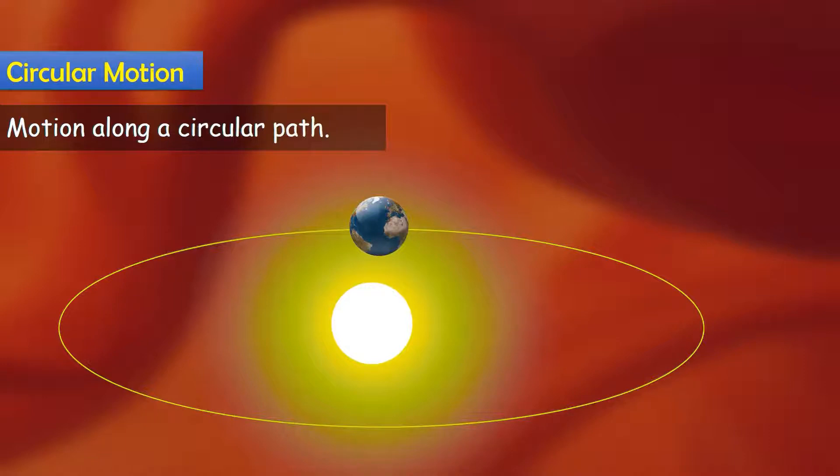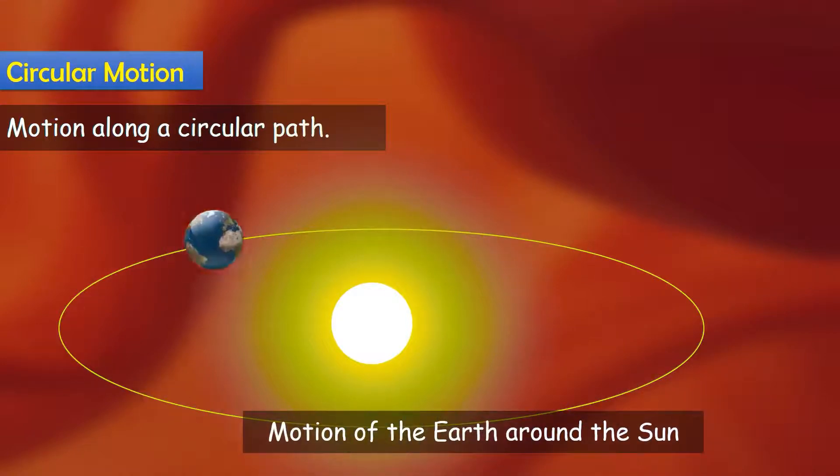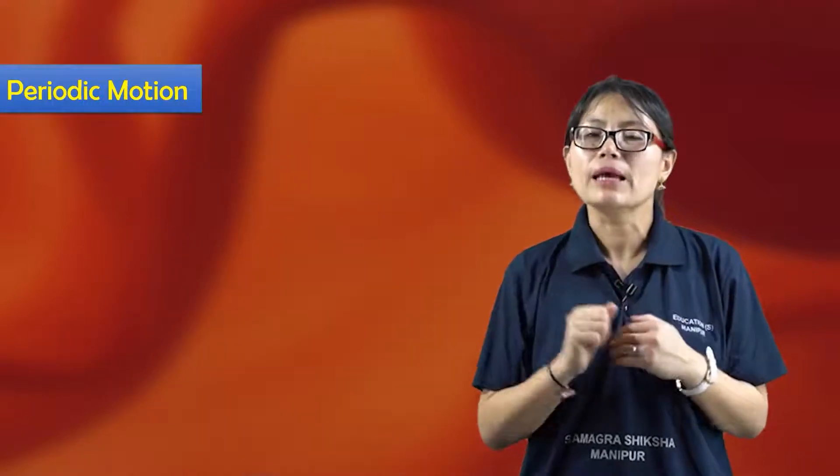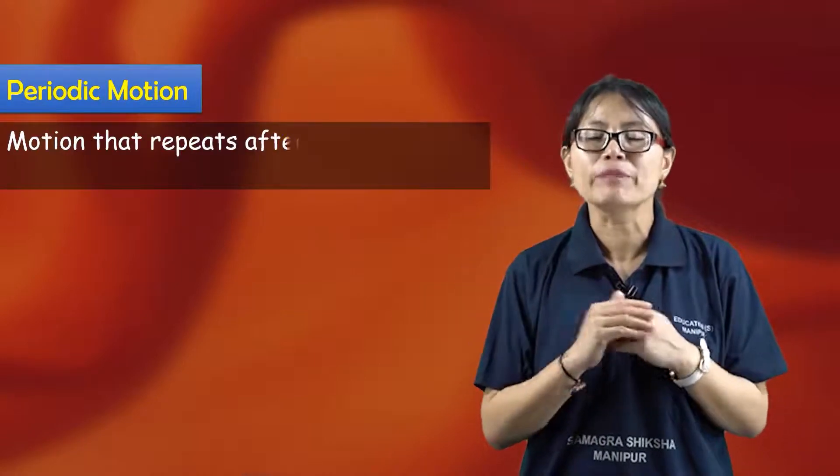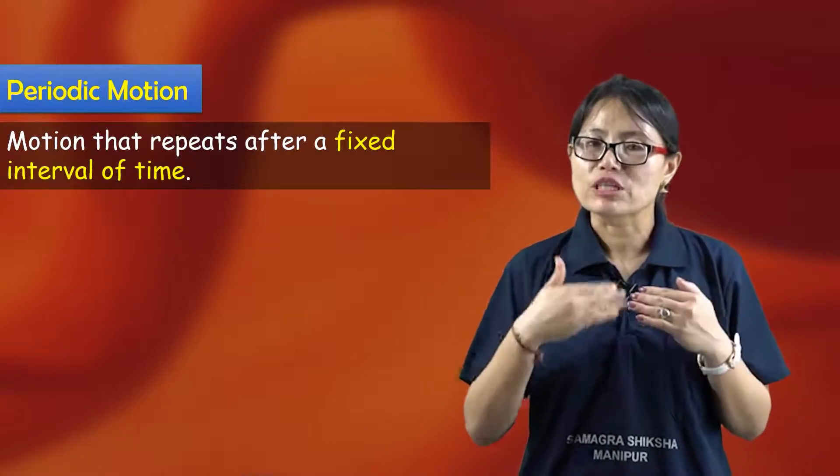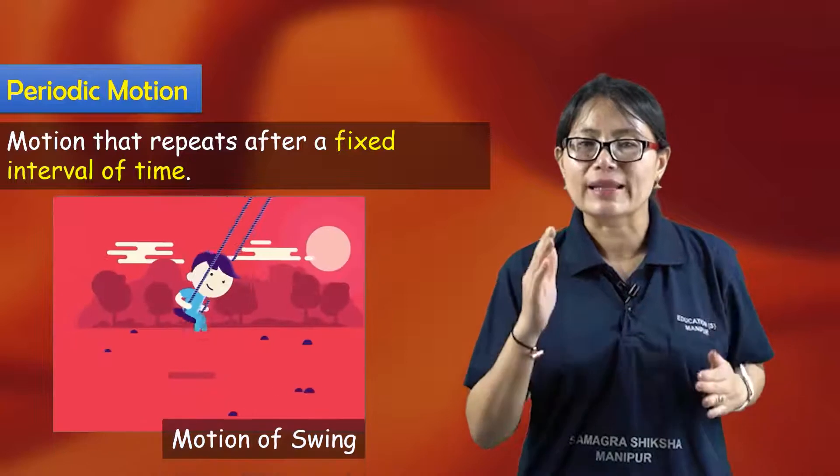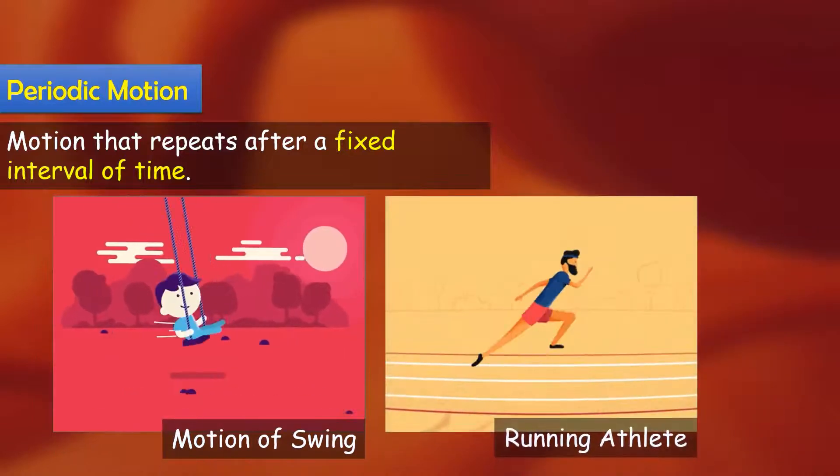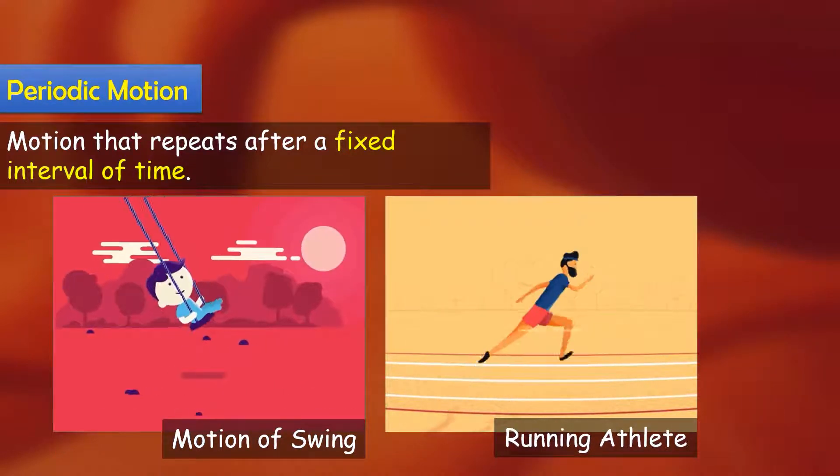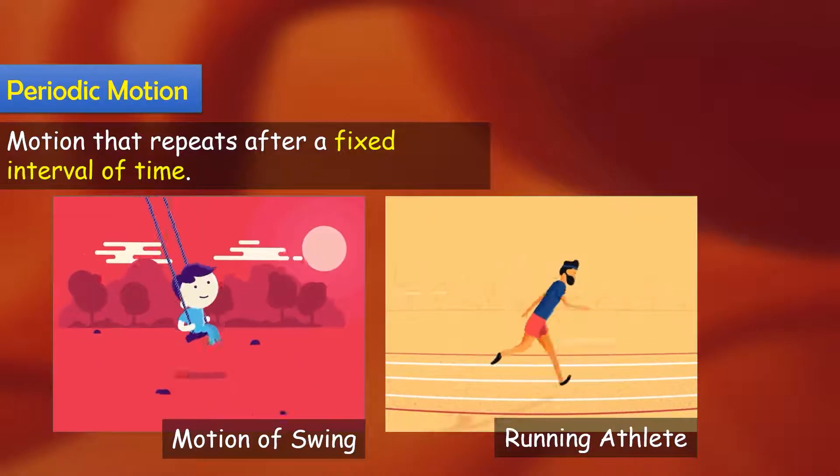The motion of the earth around the sun is rotatory motion. Then there is periodic motion or oscillatory motion, which repeats after a fixed interval of time. Example is the motion of the swing.